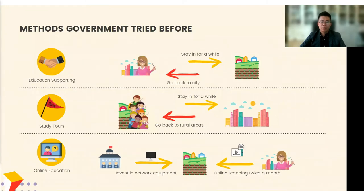Regarding the issue of urban-rural education equality, the government has proposed three approaches. The first way is voluntary rural teaching, where urban teachers are required to go to rural areas to complete teaching assistant tasks. The second model is a study tour, during which children from rural areas stay in the city for a short period to broaden their horizons. The third model is an online live course, where the government organizes education experts or experienced teachers to give online live courses on a regular basis.